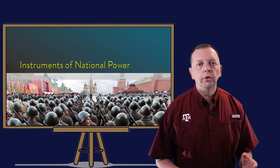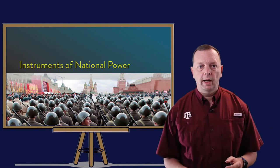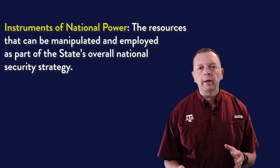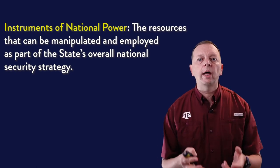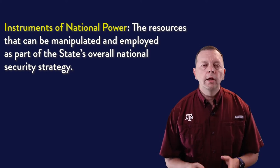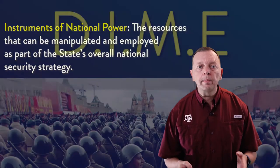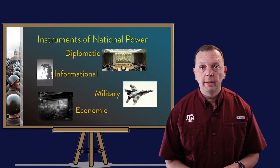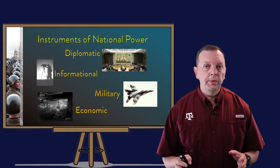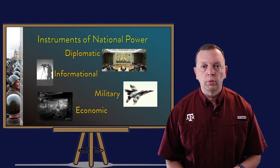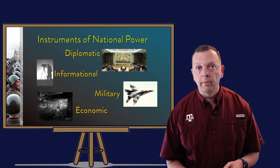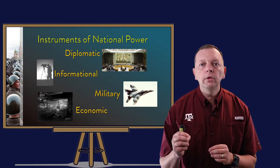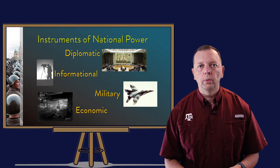How a nation uses its power is through what is known as the instruments of national power. The instruments of national power represent the resources that can be manipulated and employed as part of a state strategy for national security. We can remember the instruments of national power by thinking of the DIME: diplomacy, information, military, and economics. Together, these instruments represent the power the state may bring to bear against its regional and international neighbors. National power is a combination of all these elements, and the state can use them in varying combinations according to the situation.